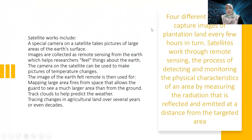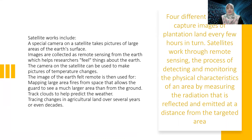Satellite work includes a special camera on the satellite that takes pictures of large areas of the Earth's surface. Images are collected as remote sensing data from the Earth, which help researchers study the Earth. The camera on the satellite can be used to map large area fires, track clouds to help predict the weather, and track changes in agricultural land over several years or even decades.